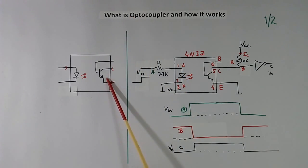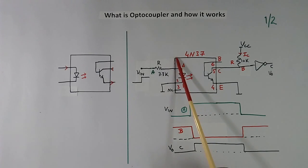So optocouplers are very useful in isolating 2 electrical circuits. Here I have shown electrical diagram of optocoupler type number 4N37.